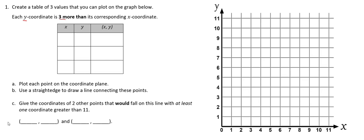So if I say that my x-coordinate is going to be three, then the y-coordinate would have to be six, because six is three more than three. I could also say that my x-coordinate is five, and three more than five would be eight. And I can get eight for my x-coordinate and eleven for my y-coordinate, because eleven is three more than eight.